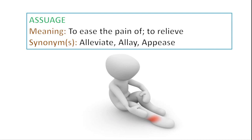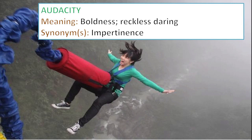Next is assuage. Assuage basically means to alleviate or to appease — to ease the pain or relieve the pain means you assuage the pain. Like you assuage your hunger by eating a bag of chips. The most common things that you assuage are fears, concerns, grief, guilt, etc. Next, audacity: if you're bold or reckless or daring. If you have audacity, you're the one who's daring — if you're running a red light even though you've been given a ticket, that means you're audacious or bold enough to do it. So it's reckless, daring.